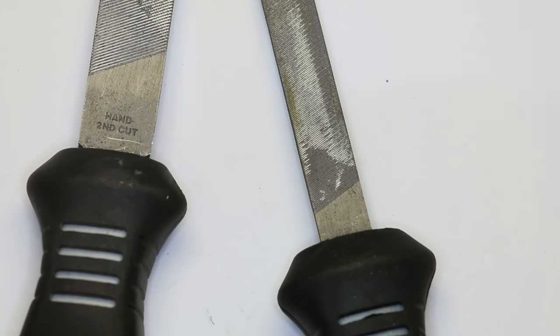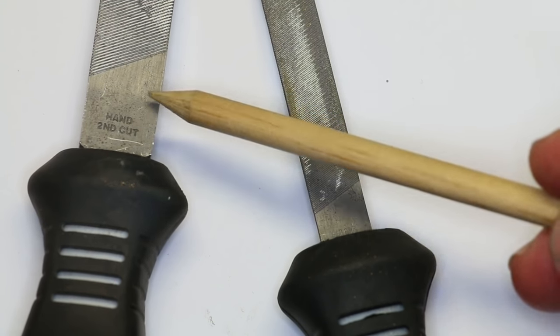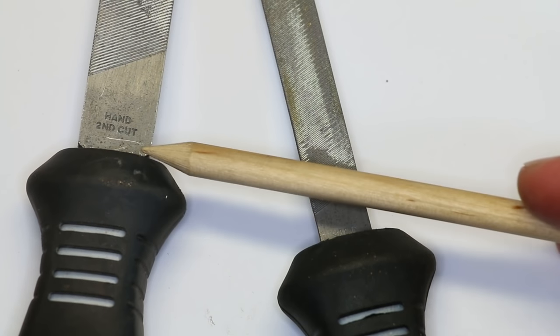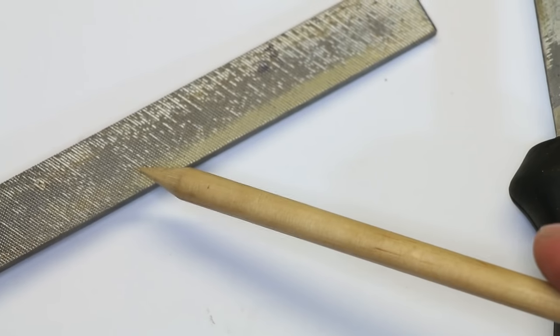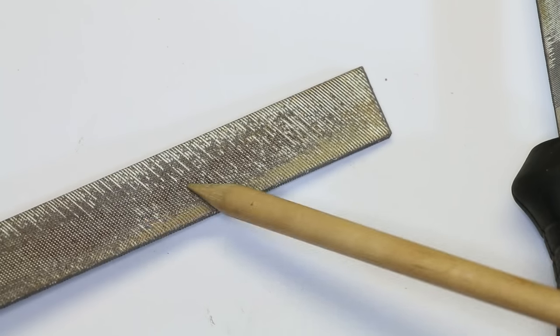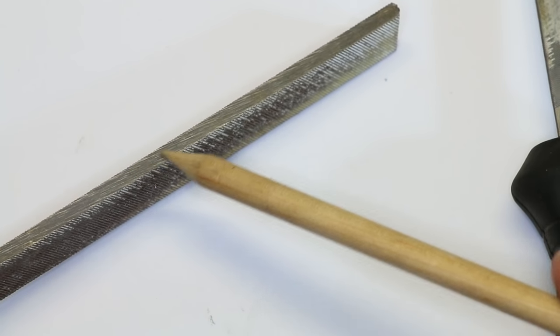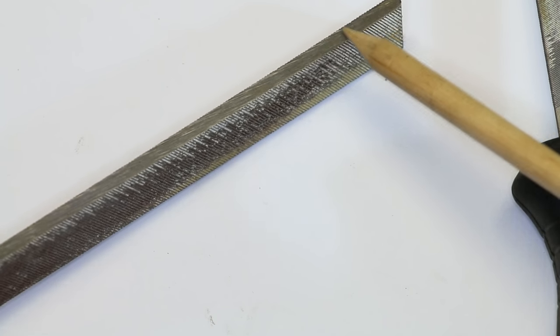In the beginning, you can get away with only having two files. These are reasonably priced engineer's files, a hand second cut file and a hand smooth cut file. These are called hand files because unlike other files where all sides have serrations, these have a smooth edge, commonly called a safety edge.